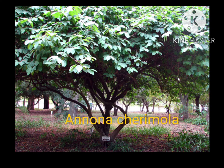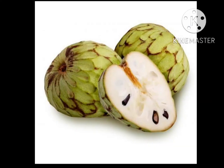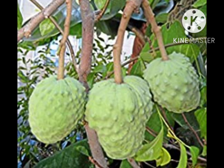Androecium: stamens numerous, arranged spirally on the elongated floral part of the thalamus. Filaments are thicker and short; anthers dithecous and adnate. Gynoecium: ovary superior, polycarpellary, apocarpous, spirally arranged on the upper part of the thalamus. Each carpel has a short beak-like terminal style and stigma.